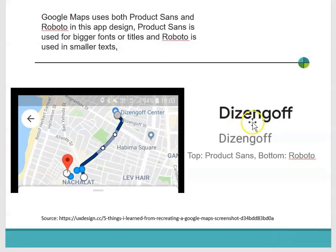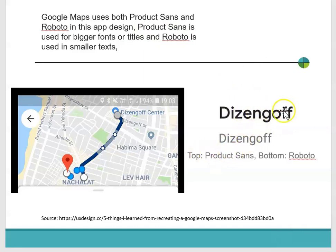So for example, when we think about fonts, Google Maps uses Product Sans and Roboto in their map app. Product Sans is for bigger fonts and Roboto is for the smaller fonts. So the top here is Product Sans and the bottom is Roboto. Maybe you don't care what Google uses, but next time you pick up a map, stop and think about what kind of font they are using.